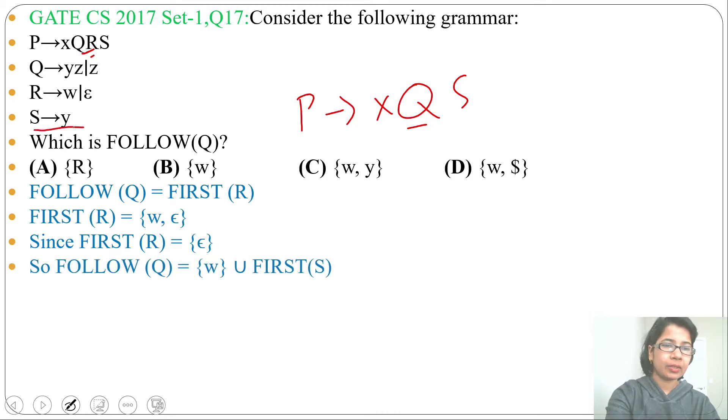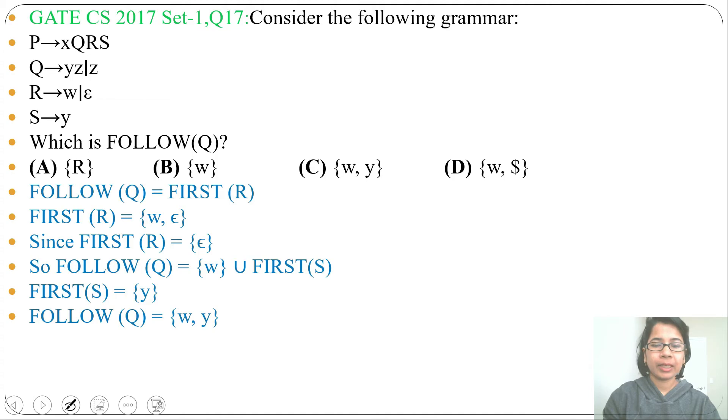Now FOLLOW of Q will be union of w and FIRST of S. FIRST of S is y. So FOLLOW of Q will be w and y. Now check which option contains w and y - option C.